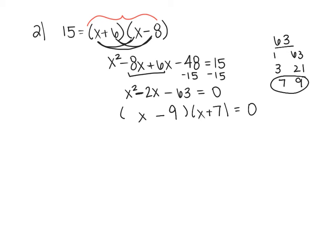Got two things being multiplied to 0, so I can use my zero product property. I'm going to get x equals 9 because I add 9 to both sides. Subtract 7 and get x equals negative 7. So in Hawks, I would do 9, negative 7.